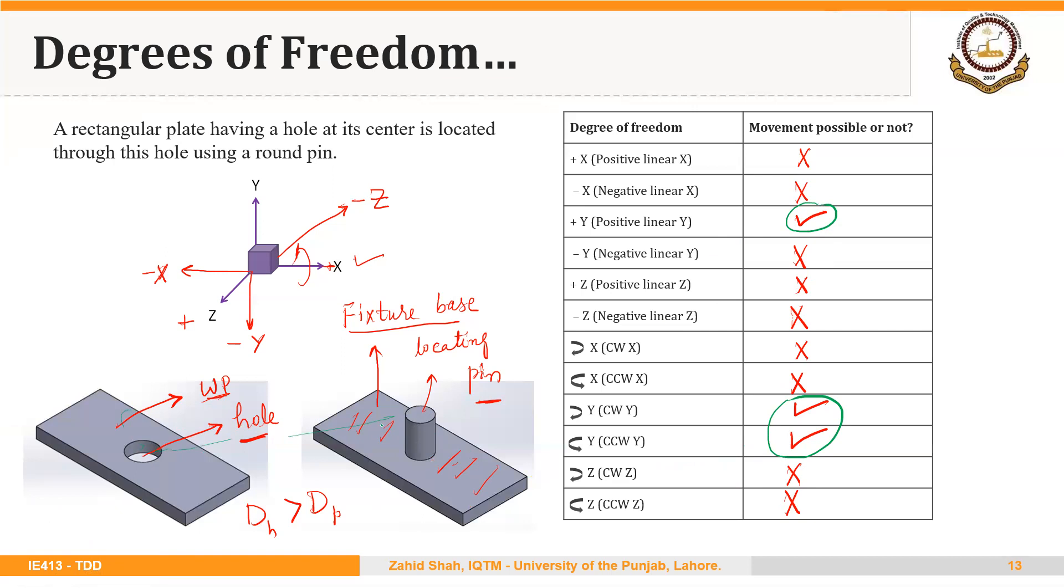However, it is a clearance fit, so these three degrees of freedom are not restricted. The method of location was through a hole already drilled in the workpiece, and the primary device of location was a pin.